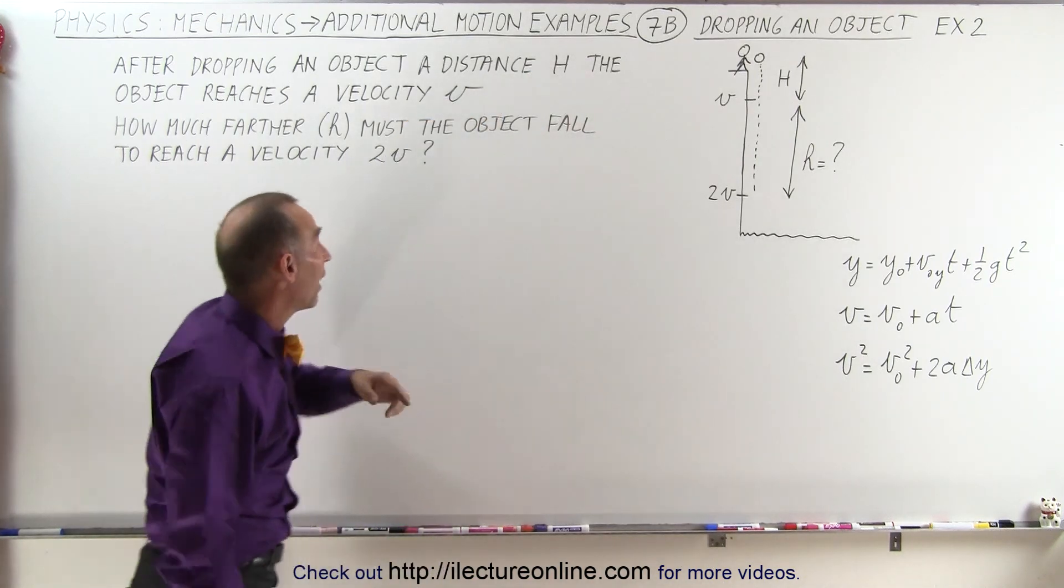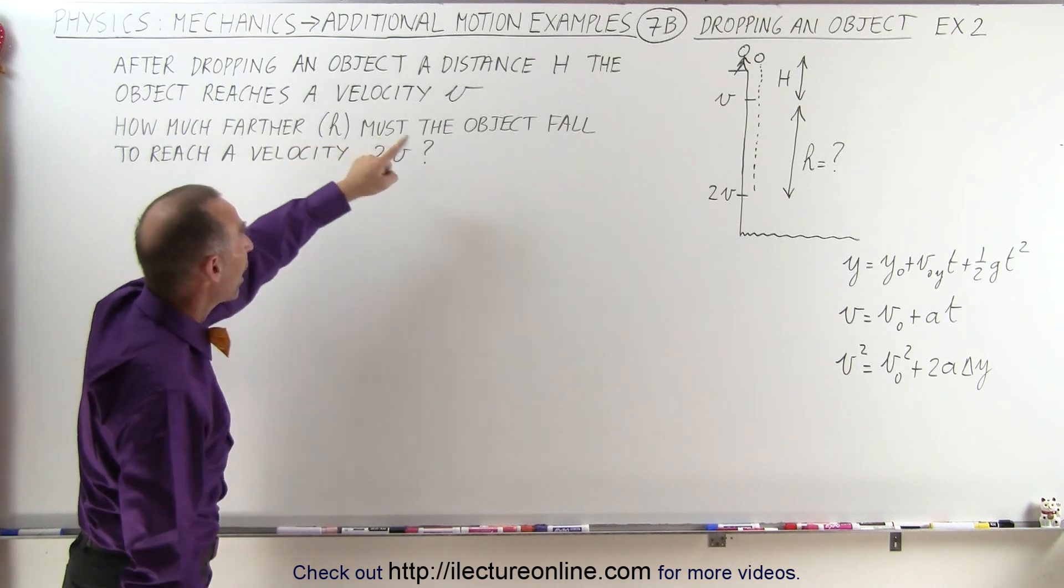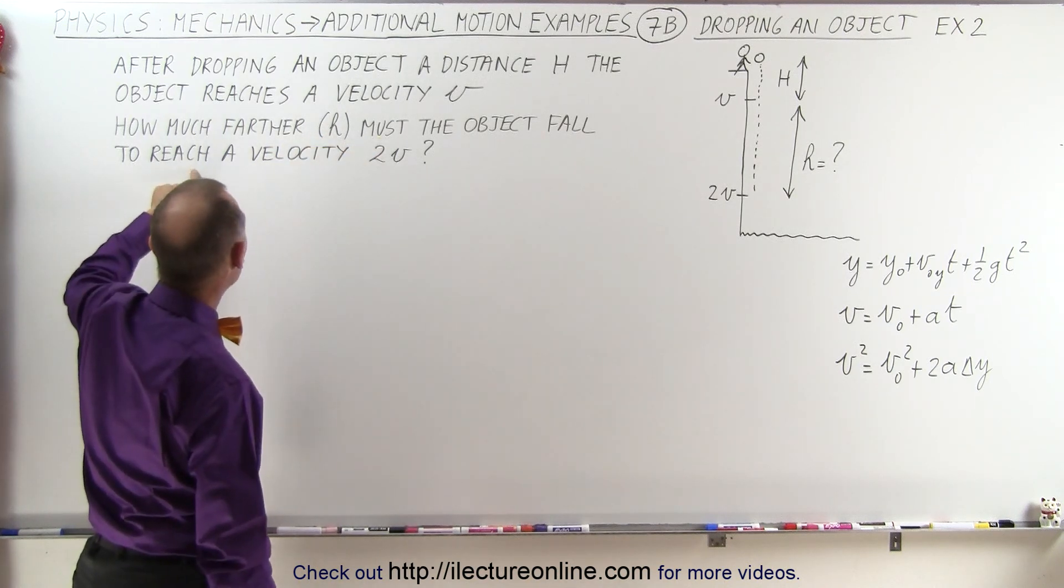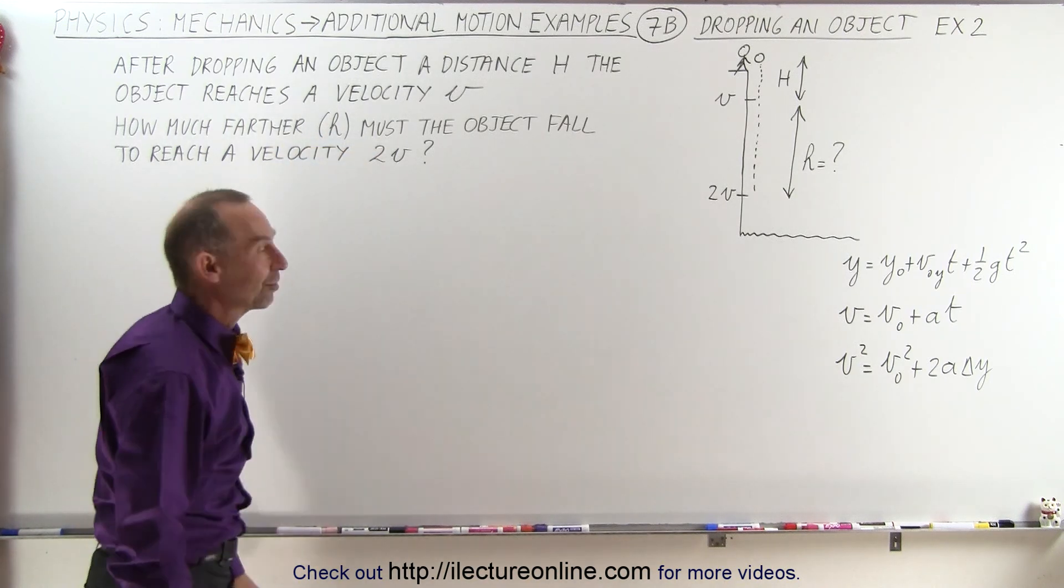it has reached the velocity v. Then the question is how much farther, let's call it small h, must the object fall before it reaches the velocity twice as fast, 2v.